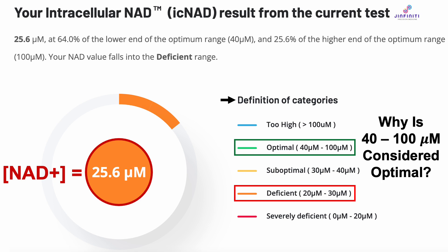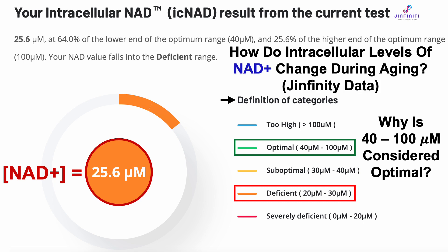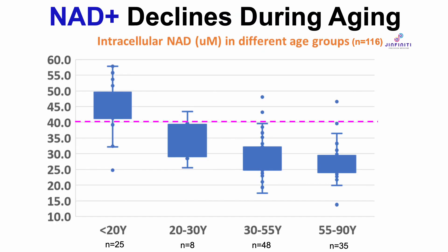So why are these data considered optimal or deficient? More specifically, why would 40 to 100 micromolar be considered optimal? For that, we go back to how intracellular levels of NAD change during aging, but now with more specific data using GINFINITY's data — including actual micromolar amounts.